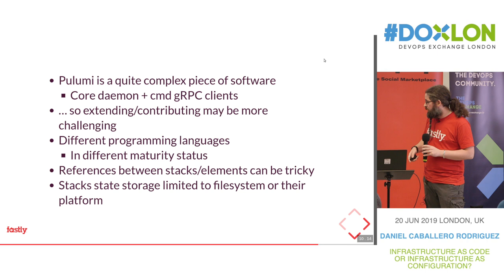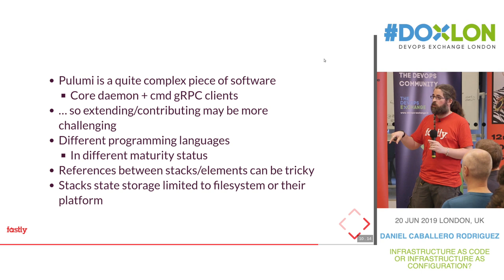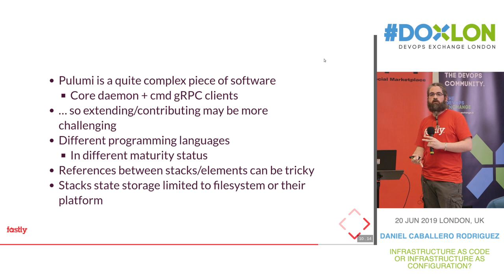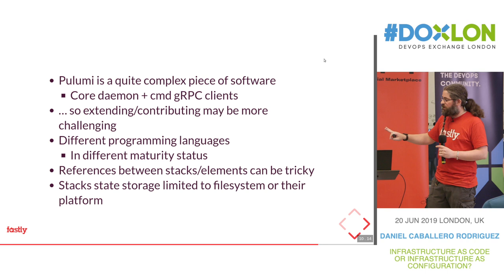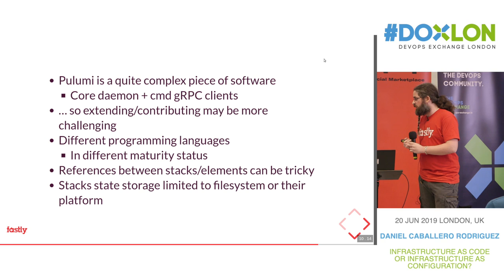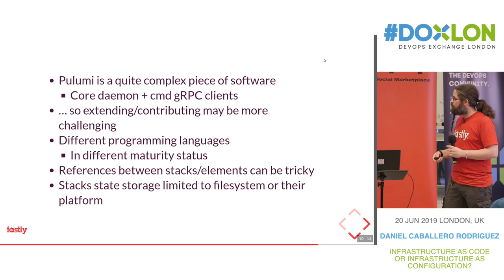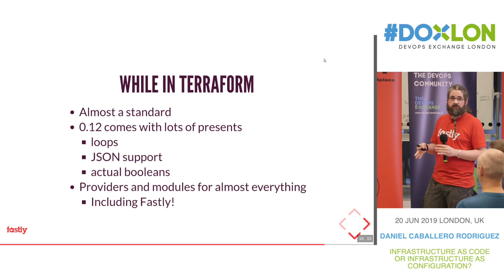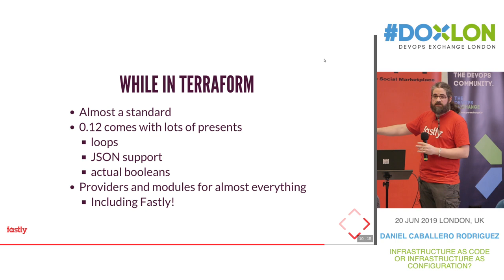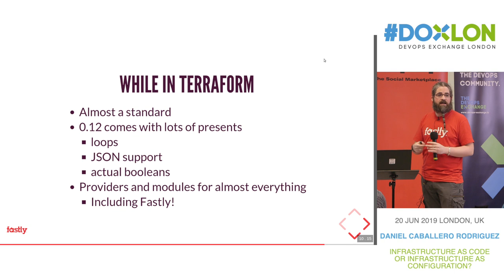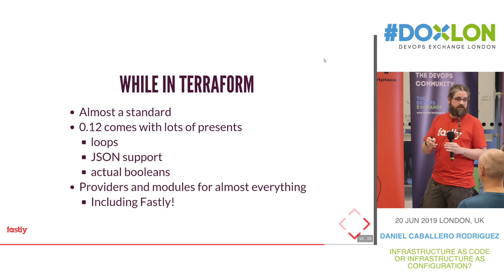Regarding state storage: in Terraform you have several options — you can upload state to the platform, to Google Cloud buckets, or to S3 buckets. While in Pulumi, you can only store state on disk or in their platform with their enterprise functionality. Terraform nowadays is almost a standard. The latest version mitigates some of the problems we used to have, and another good point is there are modules for almost everything — if you want to deploy a specific application, there's a high chance you find a module on GitHub you can reuse or extend.